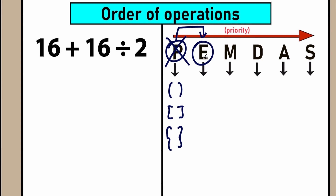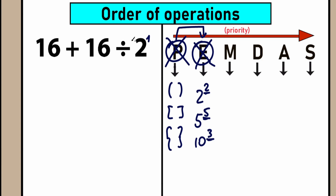The next step is E — E stands for exponents, which means powers. We're talking about things like 2 to the power 2, 5 to the power 5, 10 to the power 3. In our question, there are no powers — no cubes, no fourth powers, none of those — so we can skip this part and move forward.